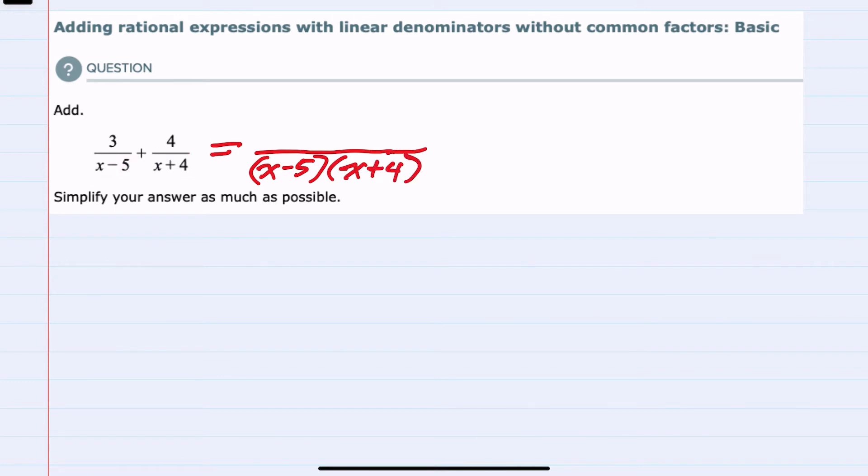Knowing that, I'm going to give myself a little bit more room and start with this first term, 3 over x minus 5. And to get the common denominator, that x minus 5 would need to be multiplied by the x plus 4. And to multiply the denominator by x plus 4, I have to also multiply the numerator by x plus 4. Then, for the second term,